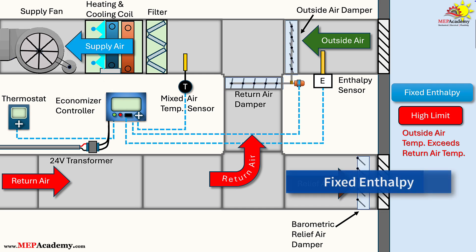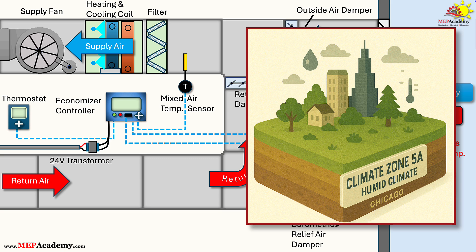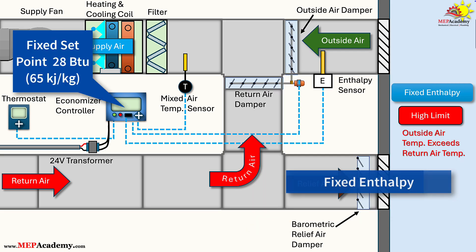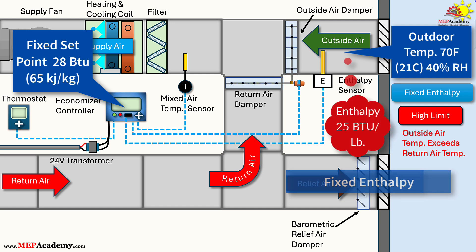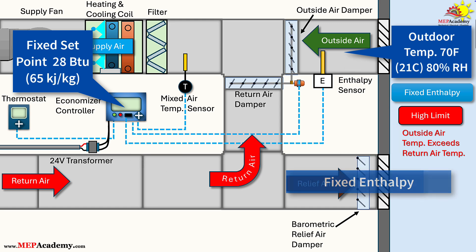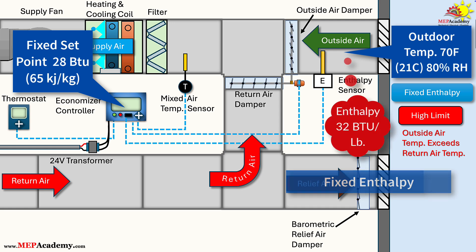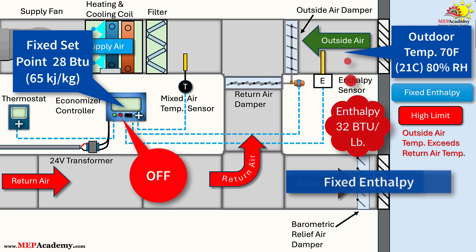In a hospital in a humid climate like Chicago, Zone 5A, the set point is 28 BTU/lb. On a mild day with outdoor conditions at 70°F and 40% RH, enthalpy is equivalent to 25 BTU/lb, so the economizer enables to leverage the lower energy content of the air. But if humidity spikes to 80% RH at the same temperature, enthalpy rises to 32 BTU/lb, and it disables to prevent excess moisture entry.